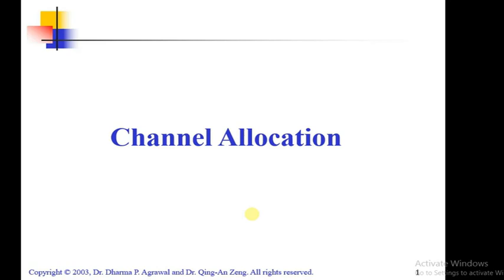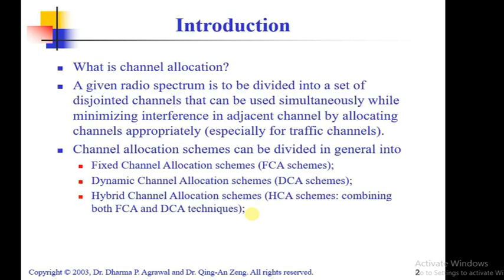I am Kaeyun. We are going to discuss channel allocation. What is channel allocation? A given radio spectrum is to be divided into a set of disjoint channels that can be used simultaneously, while minimizing interference in adjacent channels by allocating channels appropriately.